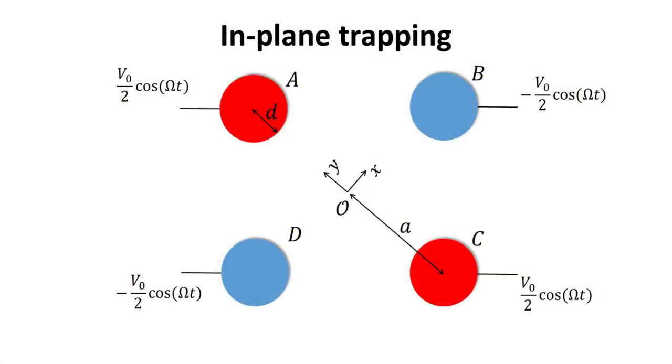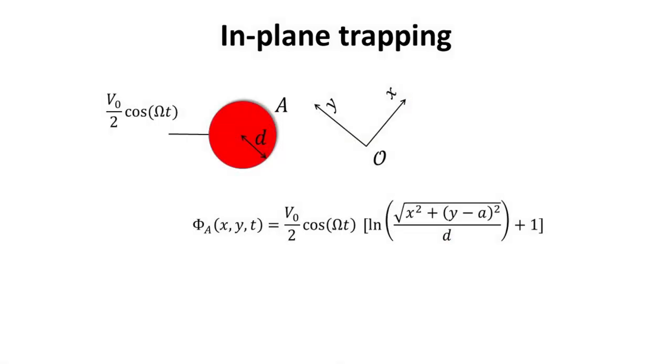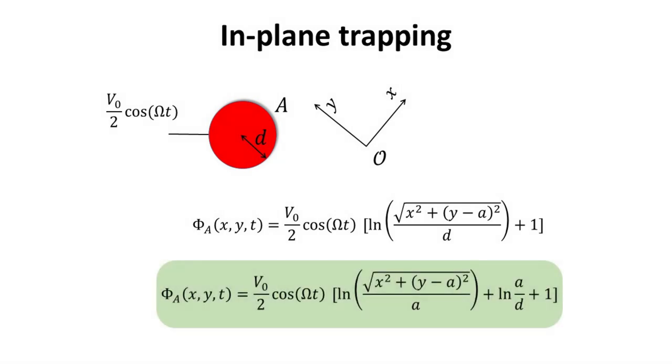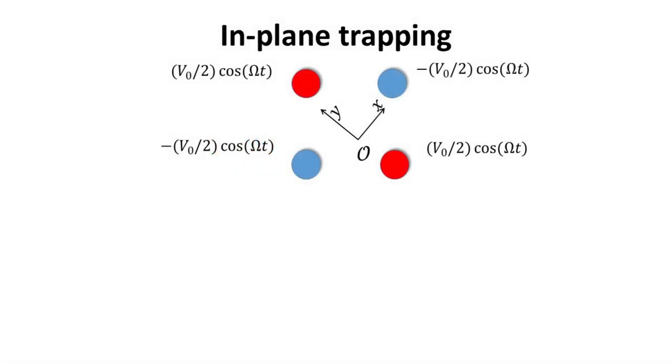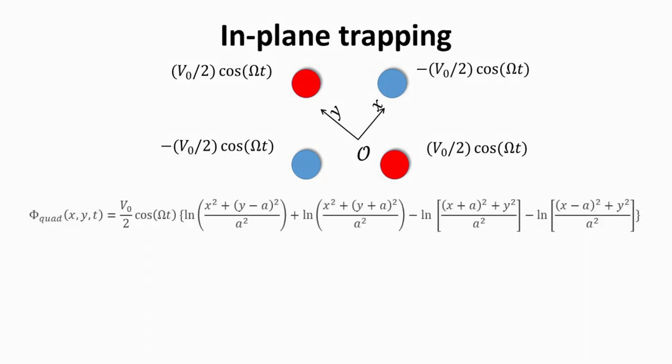Returning to our problem, we have here the cross-section view of the Paul trap. D is the diameter of the rods and A is the distance from each rod to the center of the trap. Note the origin of the system is not placed at any of the rods. Accounting for these differences and for the dynamical potential at the surface of the rods, this is the potential created by the rod A. Rearranging the terms inside of the natural log, we obtain this formula. Now, with all the rods together, their individual contributions can be superimposed, and this is the sum of the potentials. Note that we are calling this potential Φ quad because it is the potential of a quadrupole.